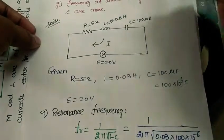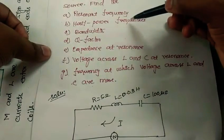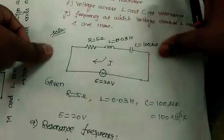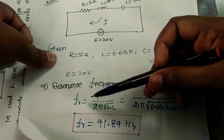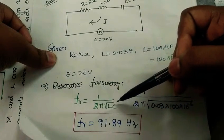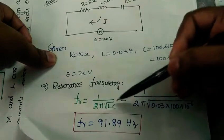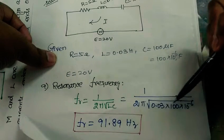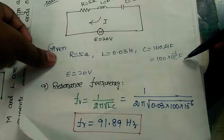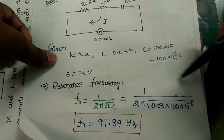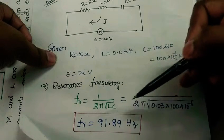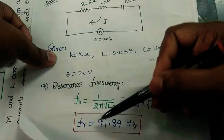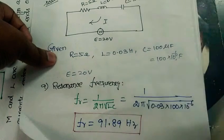First, we calculate the resonance frequency. The formula for resonance frequency is fr equals 1 by 2 pi times root LC. So 1 by 2 pi root of L value 0.03 into capacitor value 100 into 10 power minus 6. When we simplify, the resonance frequency fr value is 91.89 hertz.